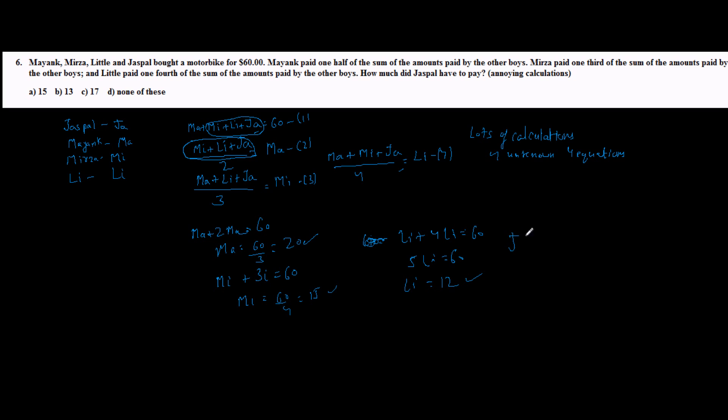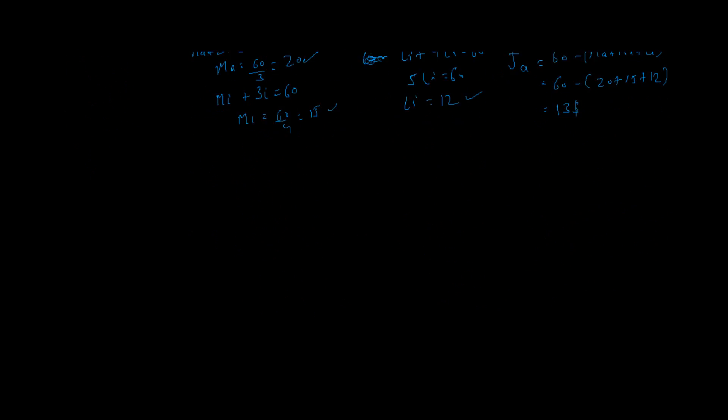So therefore JA should be now very easy for us. It should be 60 minus MA plus MI plus LI, which is equal to 60 minus 20 plus 15 plus 12, which is equal to 13 dollars. So although this looked like a tough calculation, but we made one smart move and we were able to do it very easily with minimum calculations.